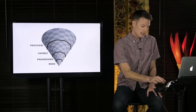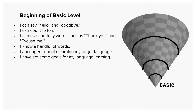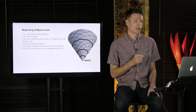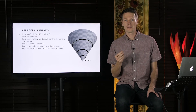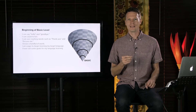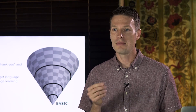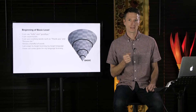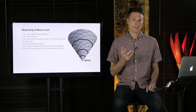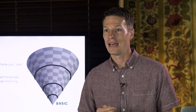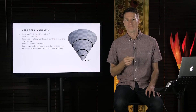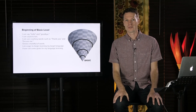Basic level. At the beginning of the basic level: I can say hello and goodbye. I can count to ten. I can use courtesy words such as thank you and excuse me. I know a handful of words. I am eager to begin learning my target language. I have set some goals for my language learning. A little further along, perhaps after a month or so, they will be able to recognize and express very simple needs in polite language, mostly using memorized words and phrases. They will recognize that they speak with a heavy accent and many errors, confusing similar sounds, and that their speech is difficult to understand even to teachers used to working with beginning language students.